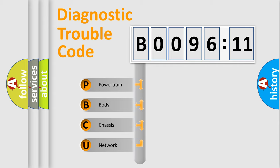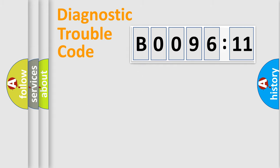We divide the electric system of automobile into four basic units: Powertrain, Body, Chassis, and Network.